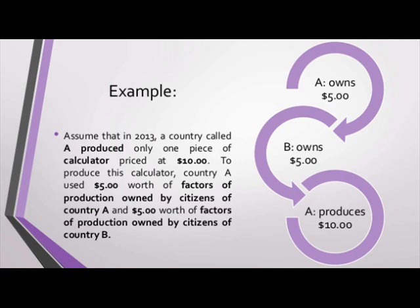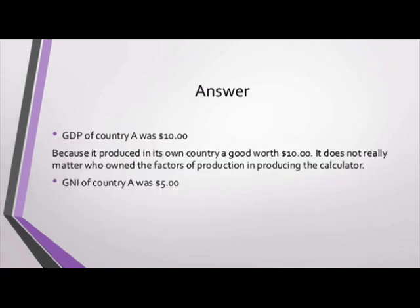For example, assume that in 2018 a country called A produced only one piece of calculator priced at $10. To produce this calculator, country A used $5 worth of factors of production owned by citizens of country A and $5 worth of factors of production owned by citizens of country B. The GDP of country A was $10 because it produced in its own country a good worth $10. It does not really matter who owned the factors of production in producing the calculator.